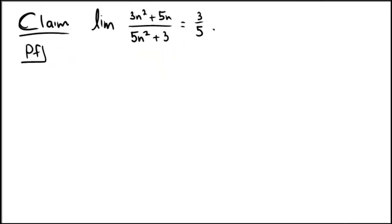Here we're going to prove that the limit of 3n squared plus 5n over 5n squared plus 3 is equal to 3 fifths, and we're going to do it formally, in other words with an epsilon N proof, so extremely formal.